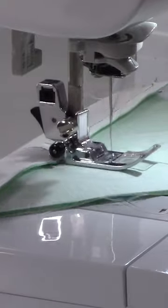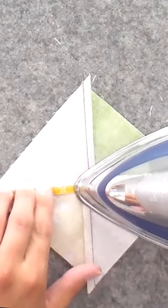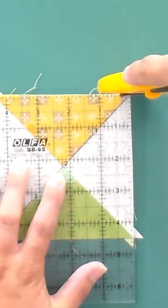Sew a scant quarter inch seam down both sides of the drawn lines and cut apart to reveal four quarter square triangles. Press the seams open and trim to a half inch larger than your finished quarter square triangle.